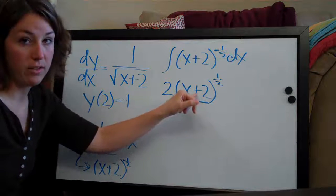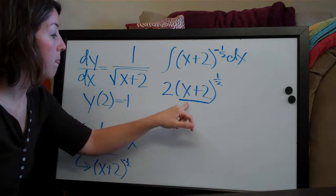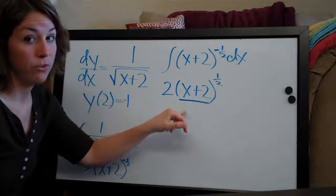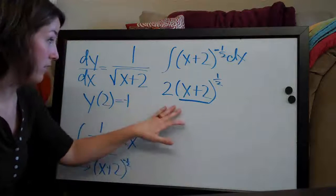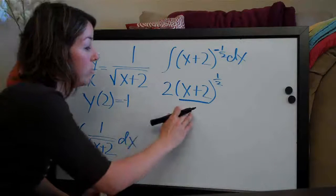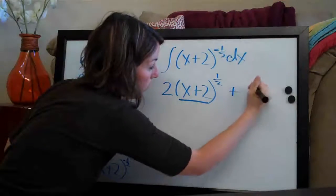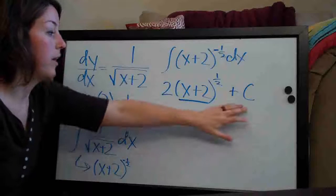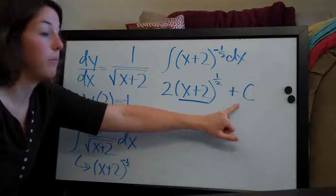For the x here, the 2 goes away, it's a constant, so the derivative is 0. So we will divide this whole function by the derivative of the inside, which is 1, so it doesn't actually have any effect on the function, so we can just leave it as it is. So we have 2 times x plus 2 to the 1 half, and then of course, whenever we take the integral, we always have to add c to factor back in for the constant that could potentially be there.